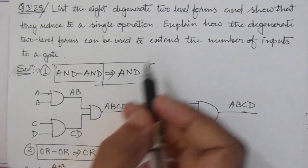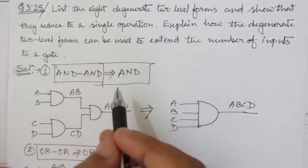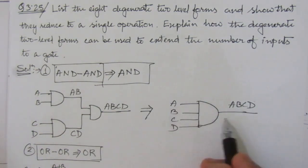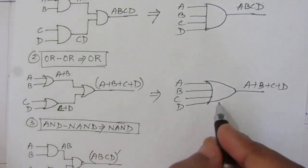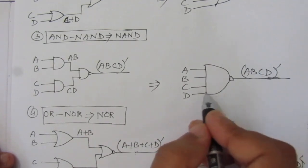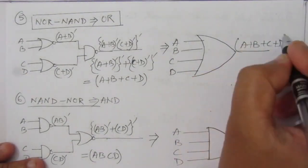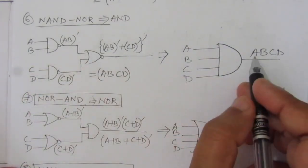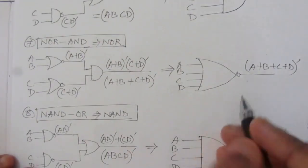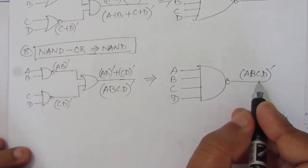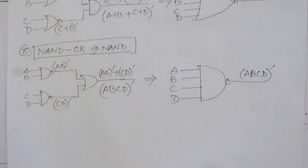This is the solution to problem number 3.25. I have explained all eight two-level degenerate forms: AND-AND reduces to AND, OR-OR to OR, AND-NAND to NAND, OR-NOR to NOR, NOR-NAND to OR, NAND-NOR to AND, NOR-AND to NOR, and NAND-OR to NAND — each realized with a single four-input gate. Thank you for watching. If you have any questions, please put them in the comment section below. Also like, share and subscribe to my channel.